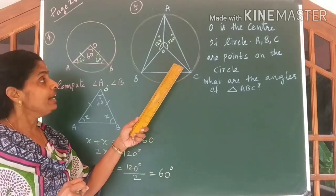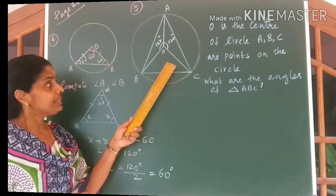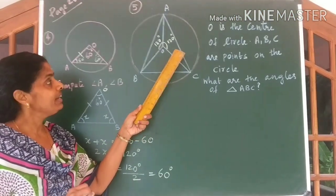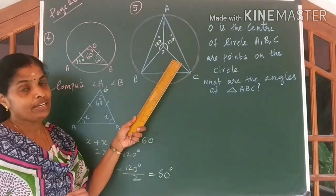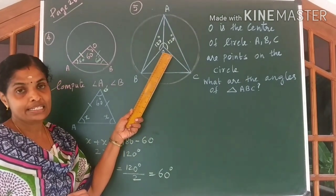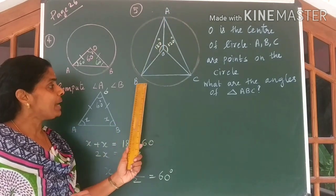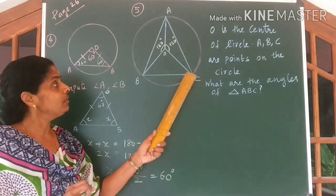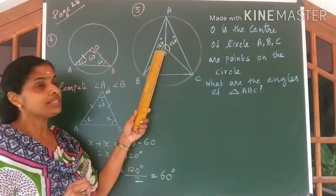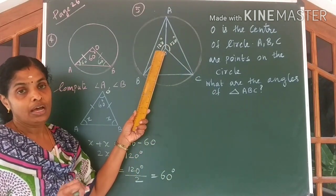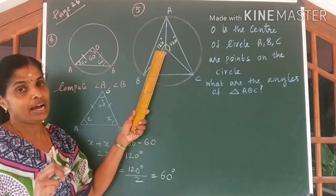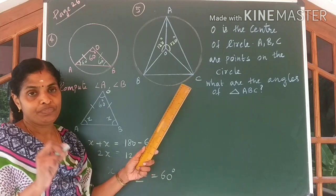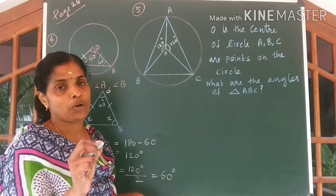Now come to the next question. The same idea is used here also. Look at the figure. You are given O to be the center, and A, B and C to be points on the circle. Two angles are given to you and the question is to find angle A, angle B and angle C. This is again a very simple problem.